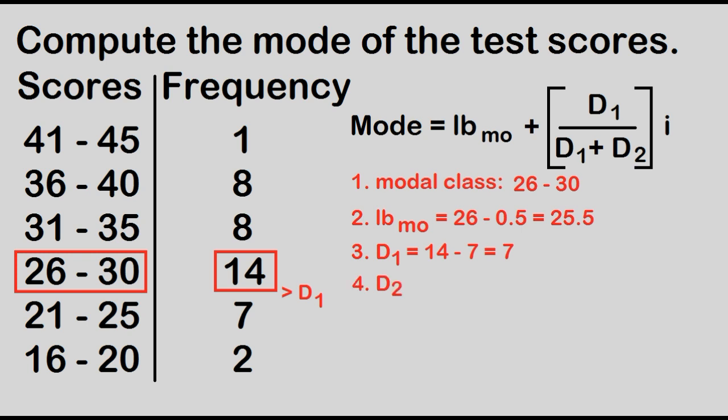D sub 2 is the highest frequency minus the frequency of the next upper class. The class width is just the difference of two consecutive lower limits. 21 minus 16 is equal to 5.